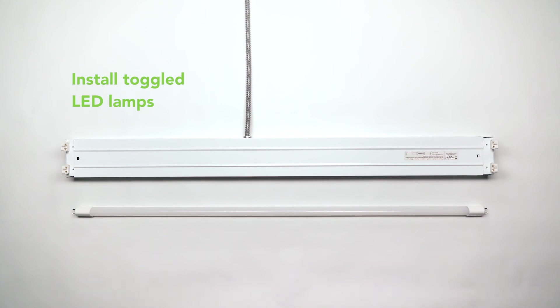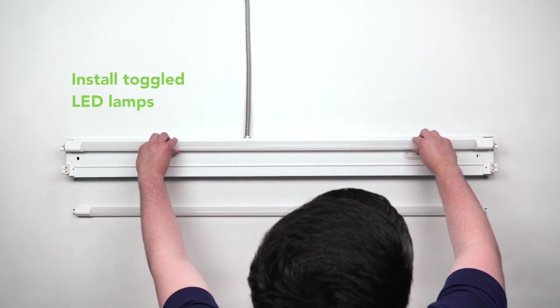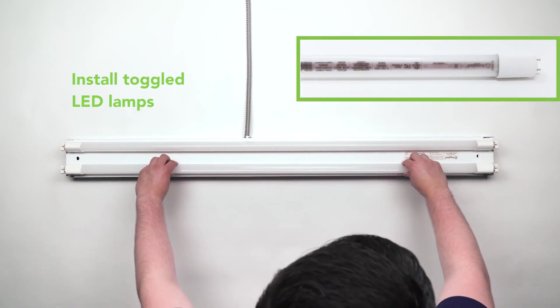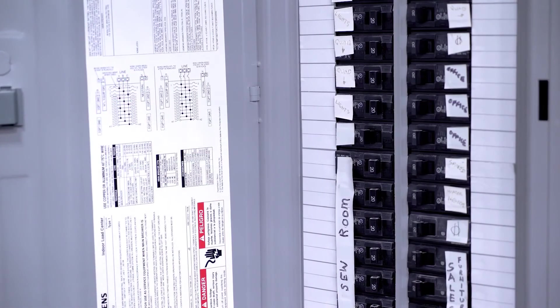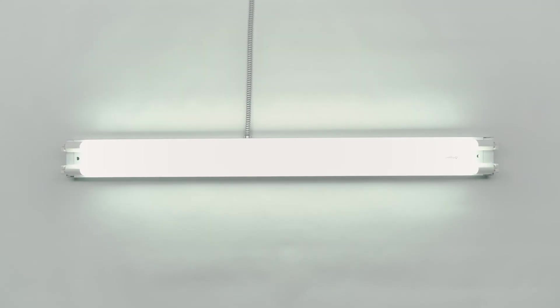You are now ready to install your toggled LED lamps. Install your lamps with the product designations at the same end as you place the fixture modification label. You can now return power to the fixture and enjoy your new toggled LED tubes.